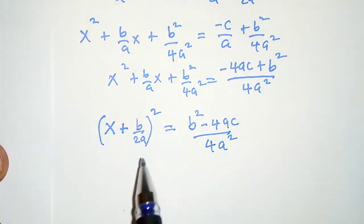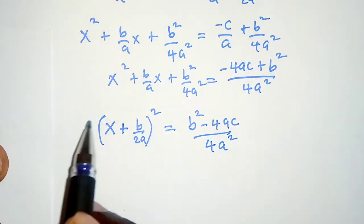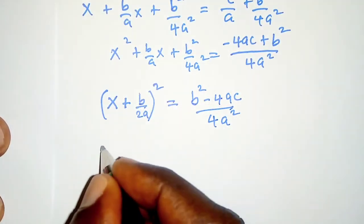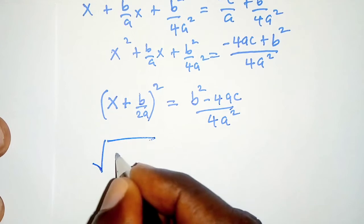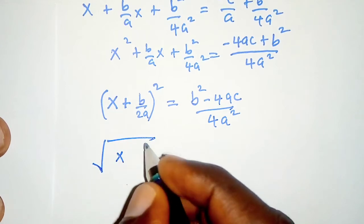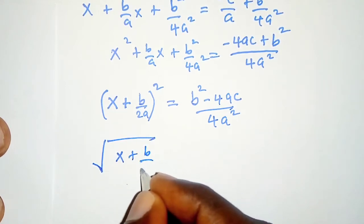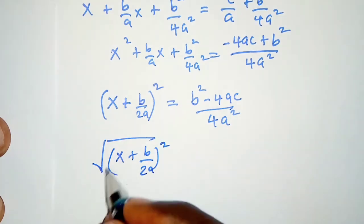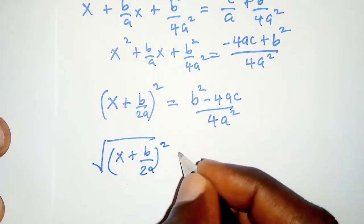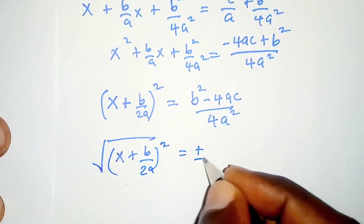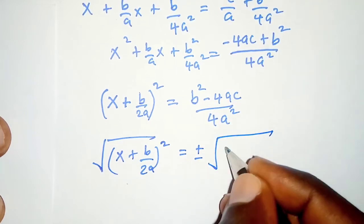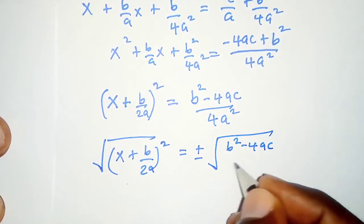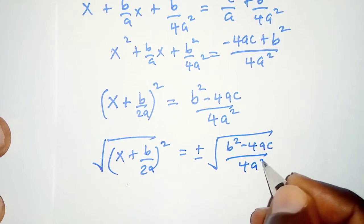At this point we can find the square root on both sides. The left hand side will have x plus b over 2a, all squared, under the square root, and the right hand side will have plus or minus the square root of b squared minus 4ac over 4a squared.